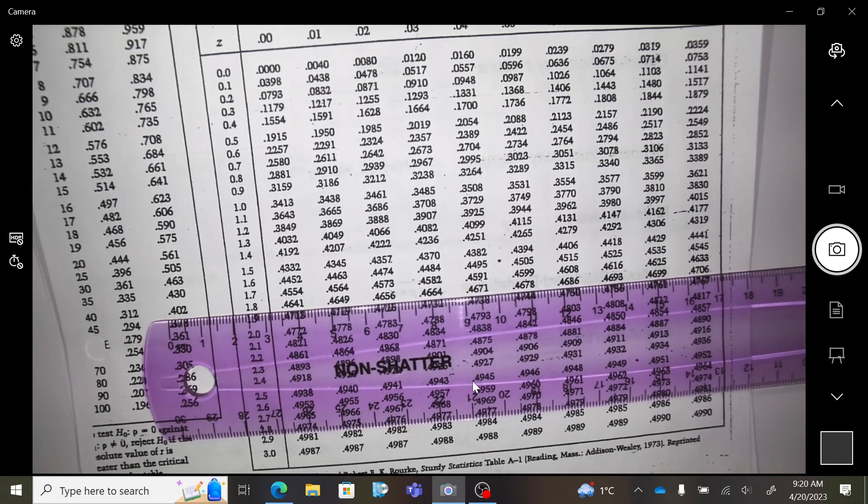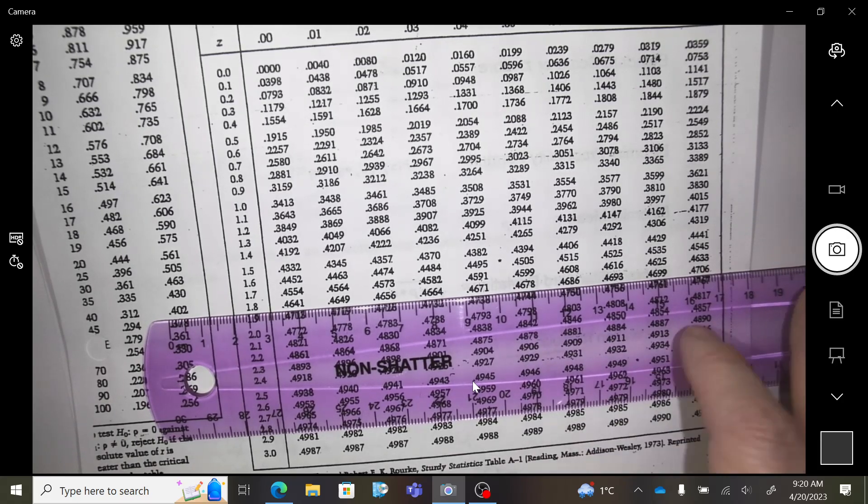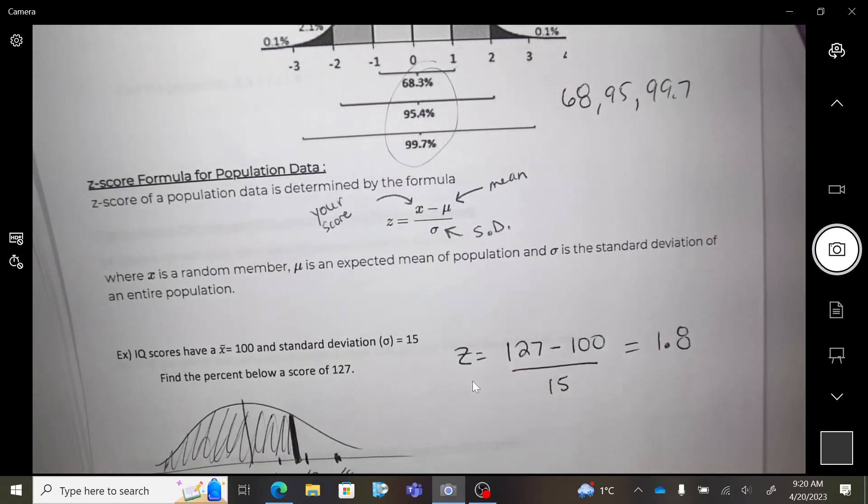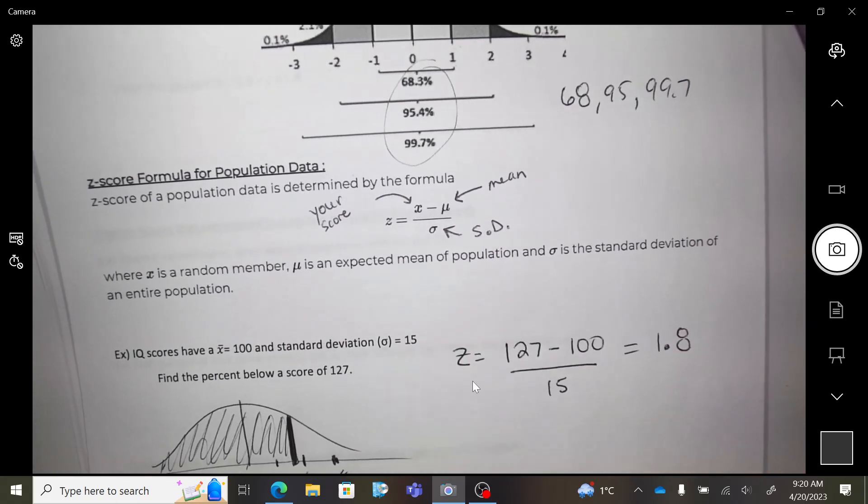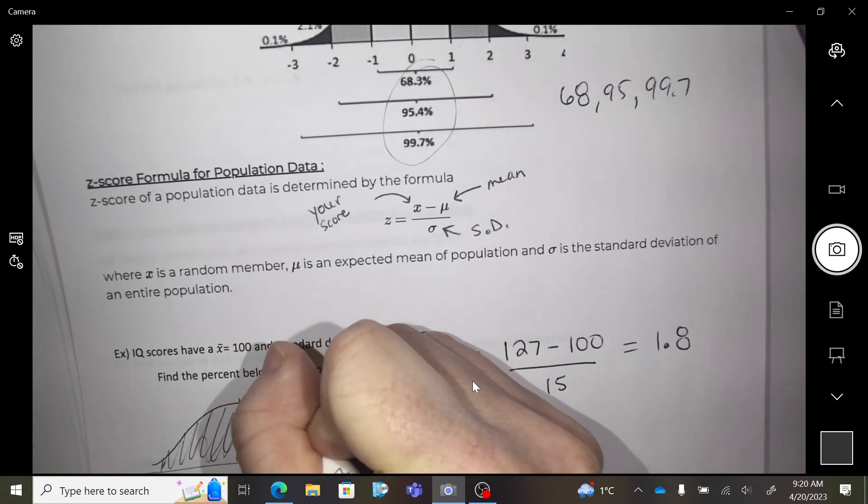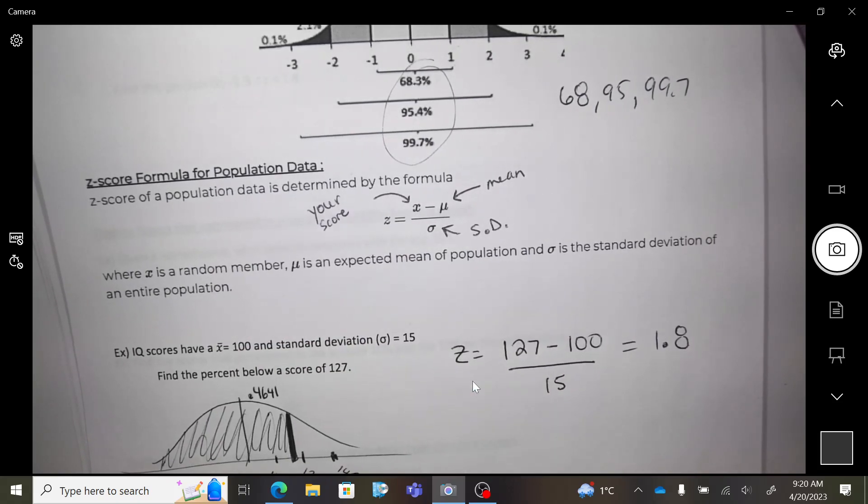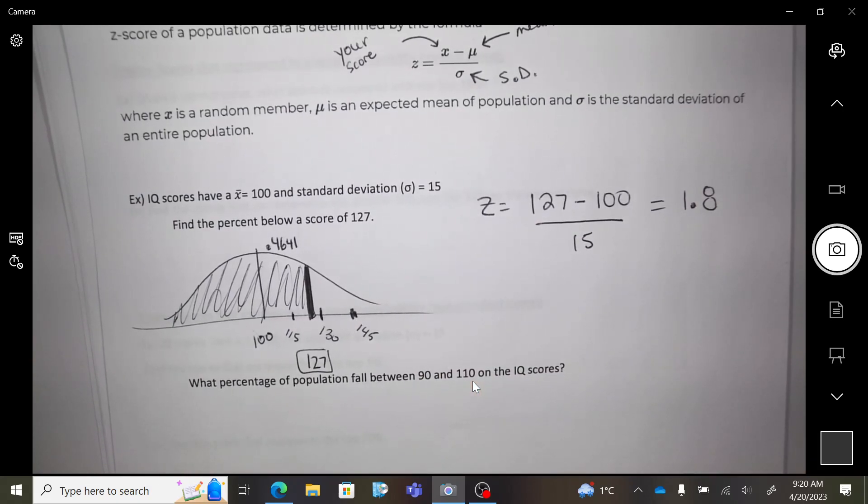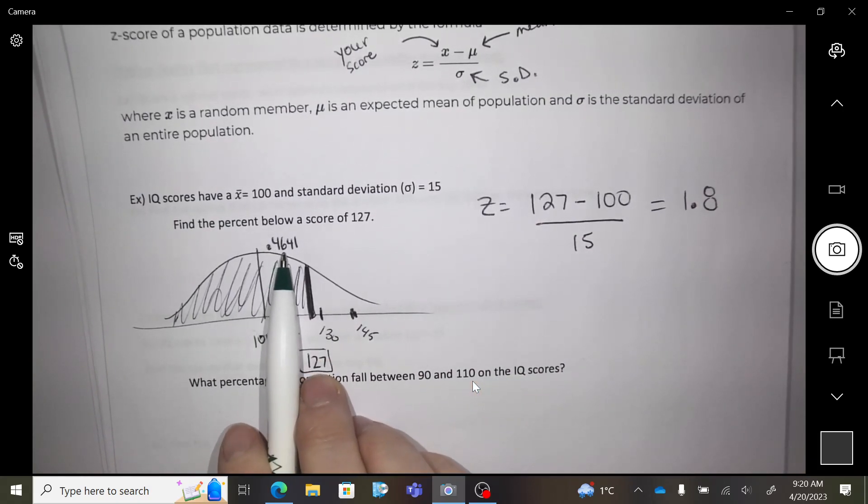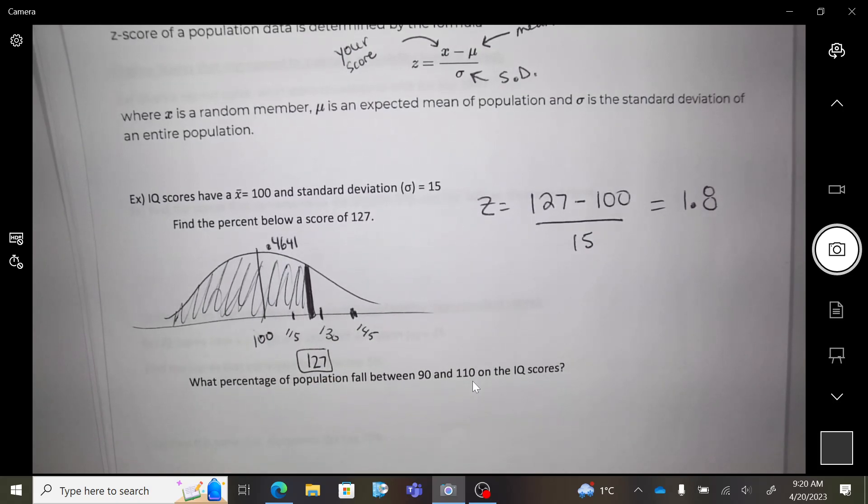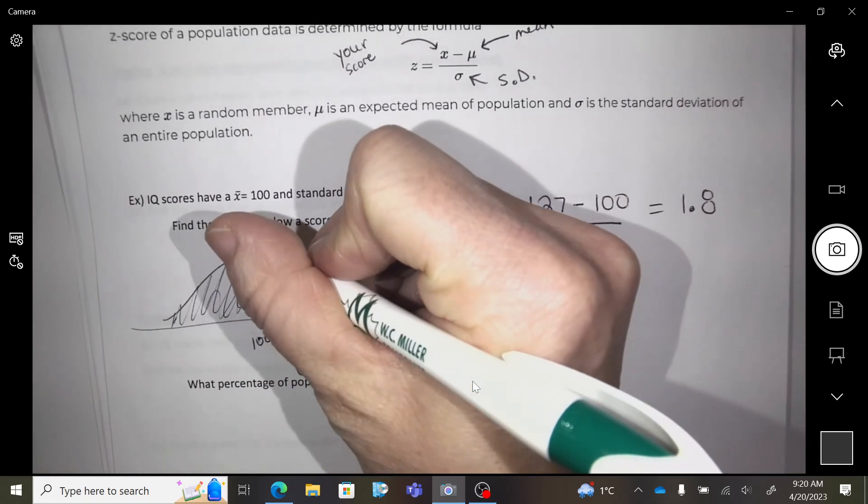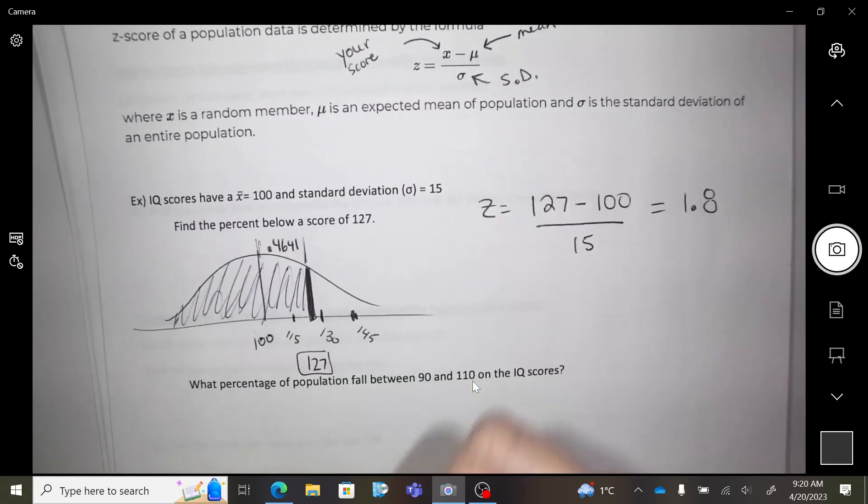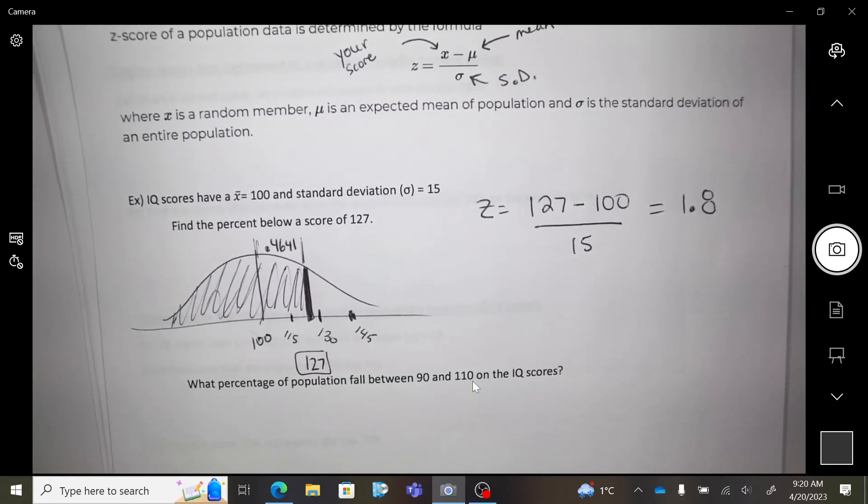So here I'm going to go down to 1.80. I got 0.4641 on my chart. Okay, so 0.4641. What does that mean in the chart? 0.4641 means that between your z-score and the middle, there's 46.4% of the data between you and the middle.